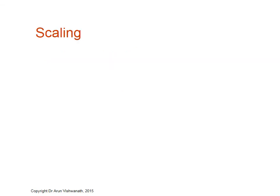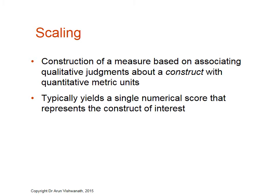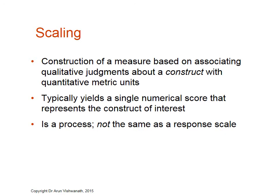How we create these items and assign weights to them is through a process called scaling. Scaling is, by definition, the construction of a measure based on associating qualitative judgments — statements about a specific construct — with quantitative metric units, which are the weights people give. Typically, the use of a scale yields a single numerical score that represents the construct of interest. Importantly, scaling is a process and it's not the same as a response scale.